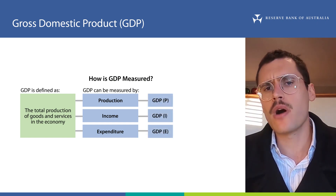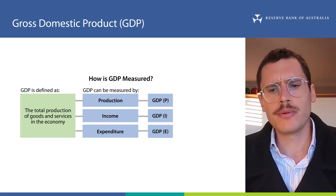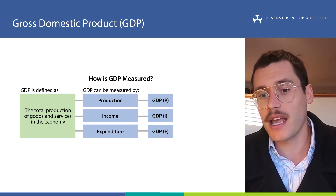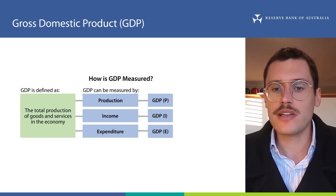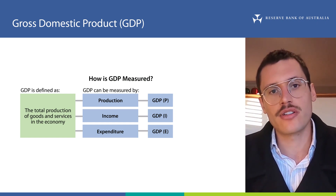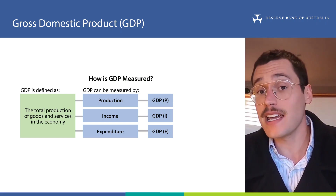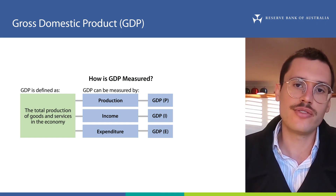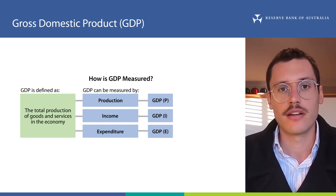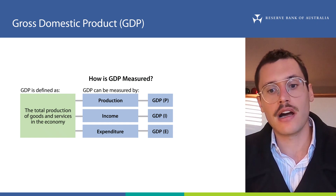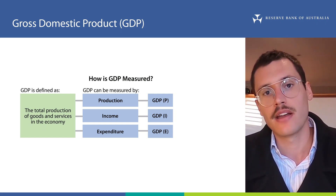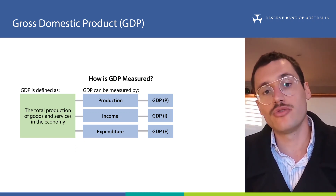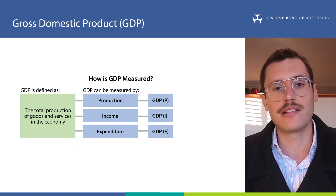You might be wondering why we need three measures of GDP — you've probably only ever seen one measure on the news and in most of the RBA's publications. Well, the issue is that the ABS can't measure the production of every good and service in the economy, because this would take too long. As a result, it can only estimate GDP using the data it collects. The different measures of GDP are three separate ways to measure the same thing, which allows the ABS to cross-check that it's arriving at a reasonable estimate.